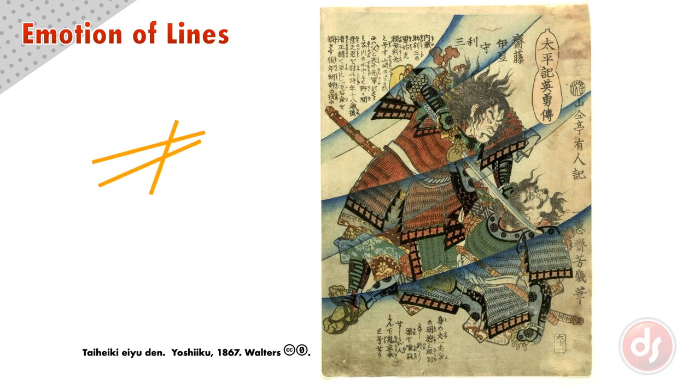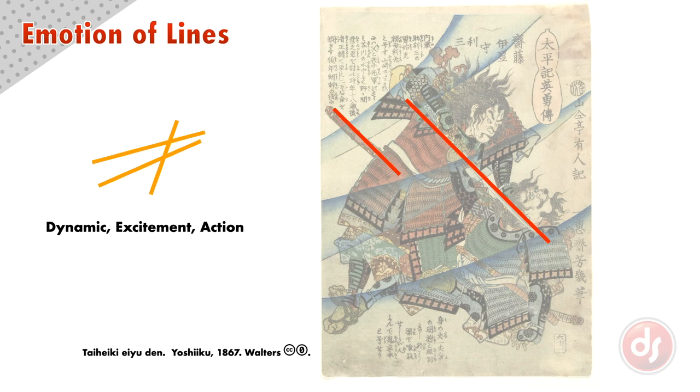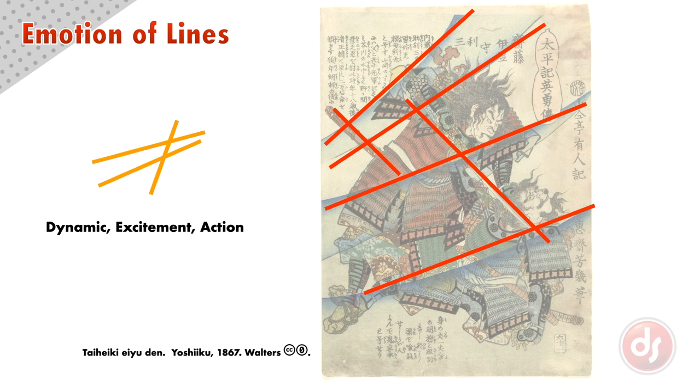Diagonal lines feel dynamic, create excitement and action. Yoshiku created diagonal lines with the sword and scabbard and cross those with diagonals going in an opposite direction with the samurai's bodies and the blue slashes of implied wind. These contrasting angles give a sense of action in the battle and creates an exciting image.